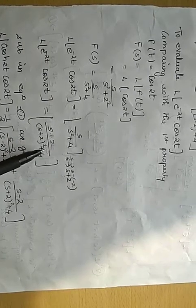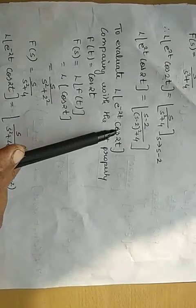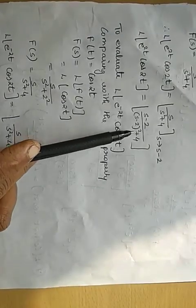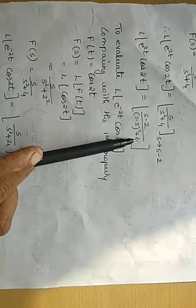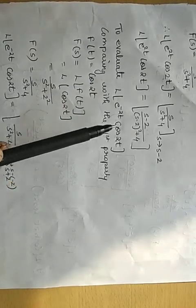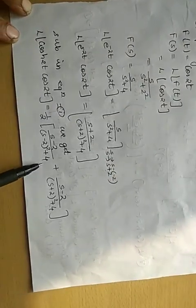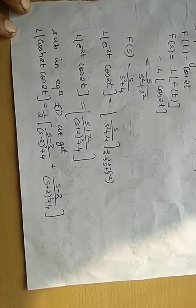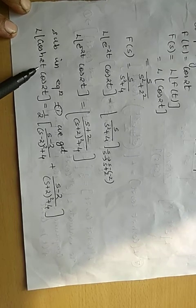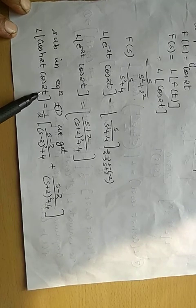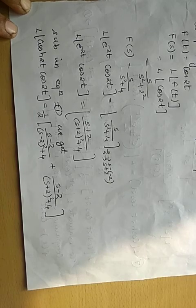Both results must be substituted back into equation 1, multiplied by 1/2. This gives the final answer for the Laplace transform of cos hyperbolic 2t into cos 2t. Thank you.